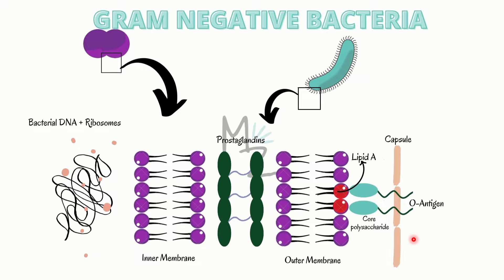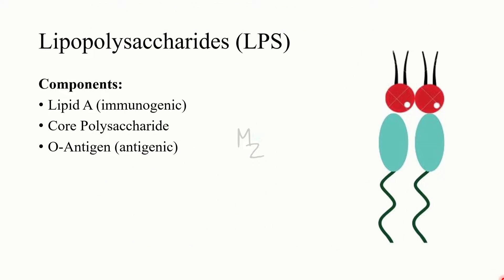The important thing to mention is the LPS, which has three elements: the lipid A (shown in red), the core polysaccharide, and the O antigen. Lipopolysaccharides have three components: number one, lipid A — it is immunogenic; number two, the core polysaccharide; and number three, the O antigen, which has antigenic properties but less so compared to lipid A. By the end of this lecture, you'll understand that lipid A is responsible for most endotoxin-related infection.